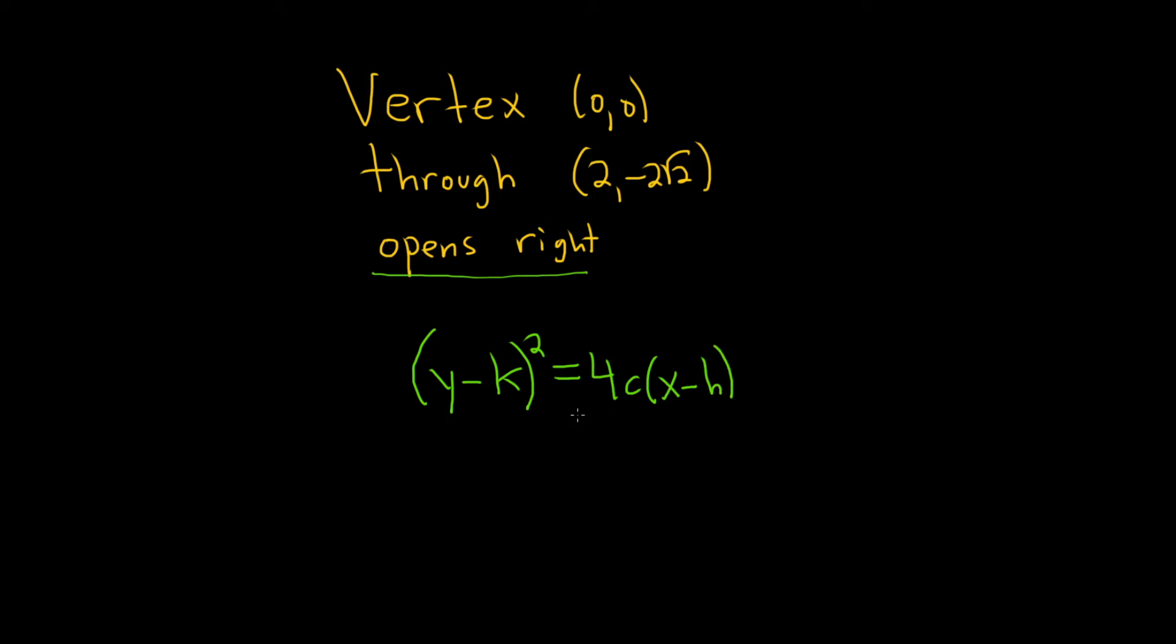Whenever the x is being squared, it's a different formula: (x - h)² = 4c(y - k). I just memorize it as if it opens left and right, the y is being squared. If it opens up and down, the x is being squared.